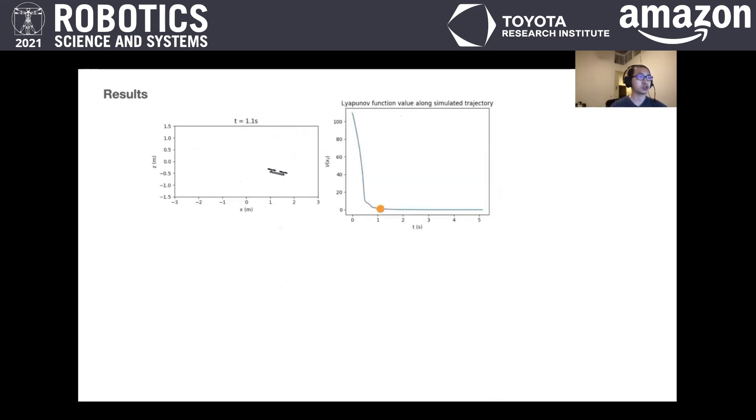We also apply our approach to stabilizing a 2D quadrotor to the origin. Here we show one simulation. To compare our neural network controller against the LQR controller, we take 10,000 sample initial states, and the neural network controller can stabilize more states.